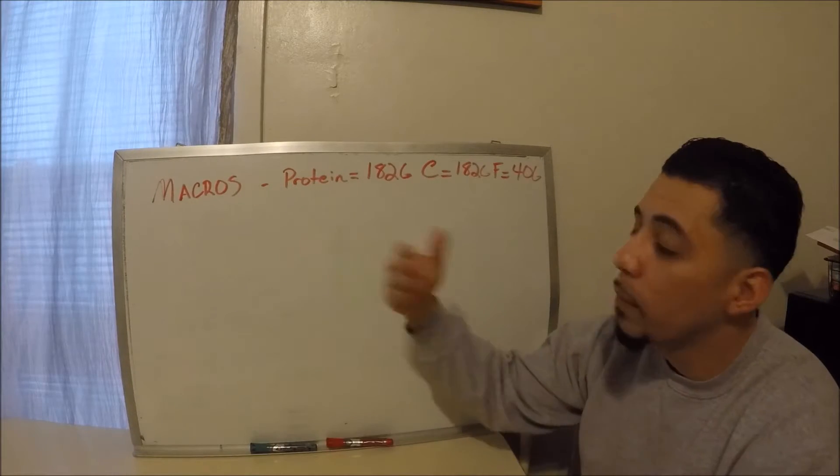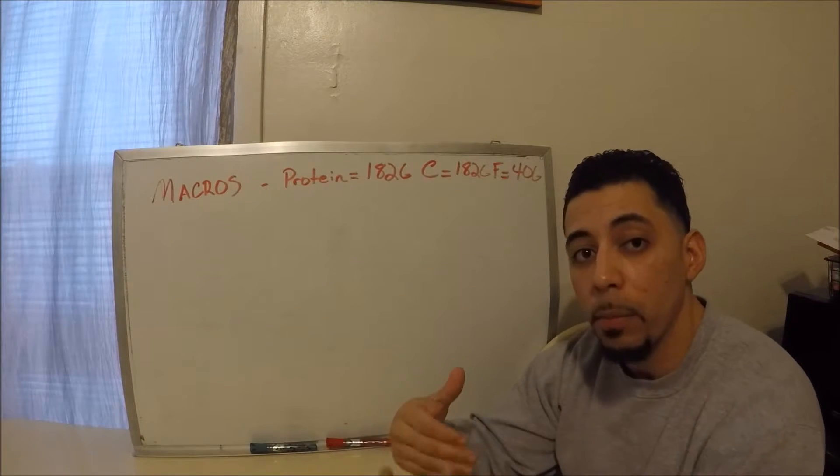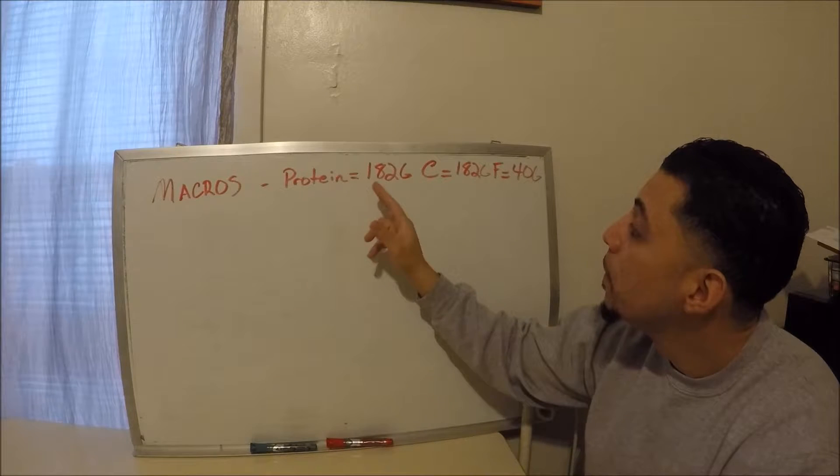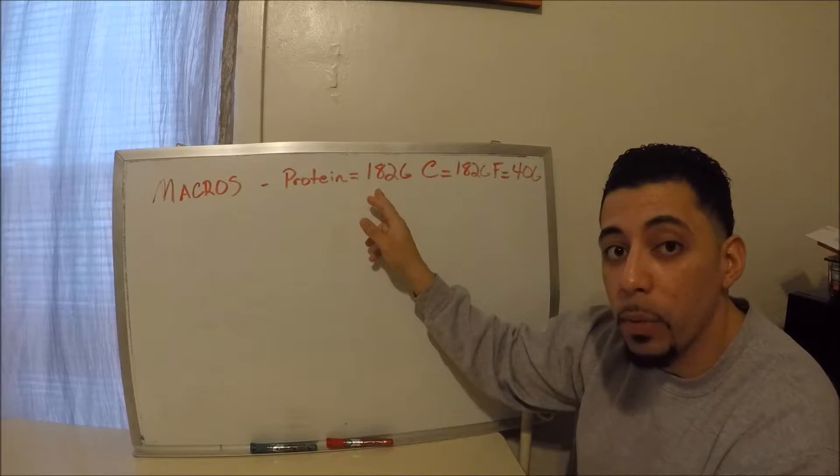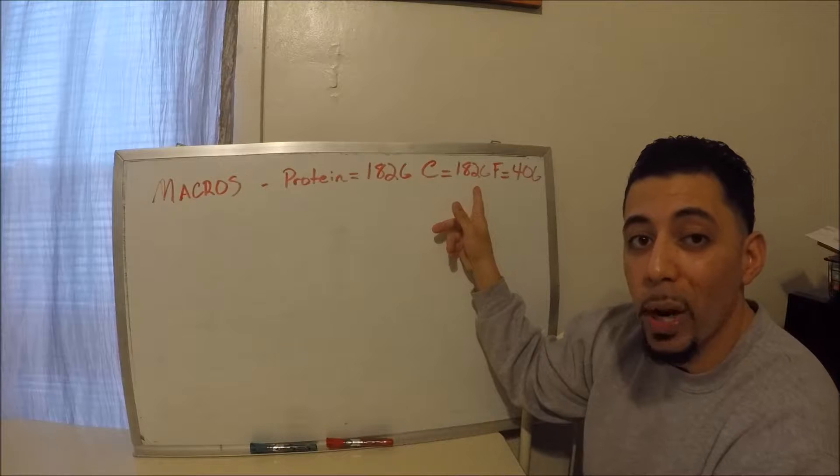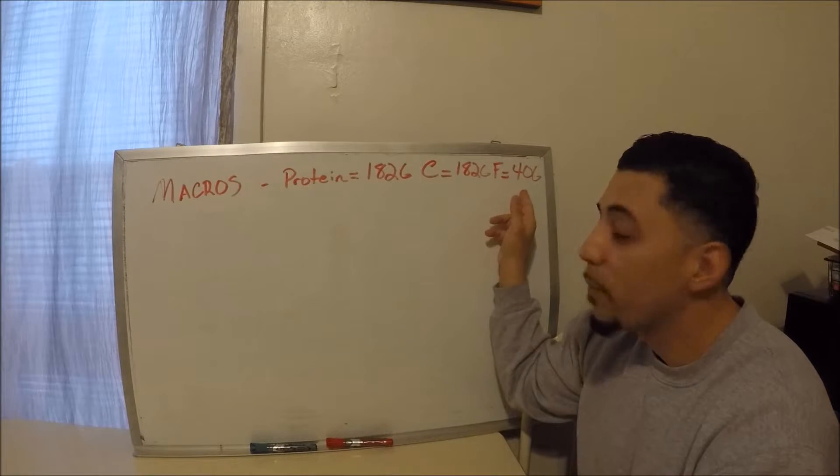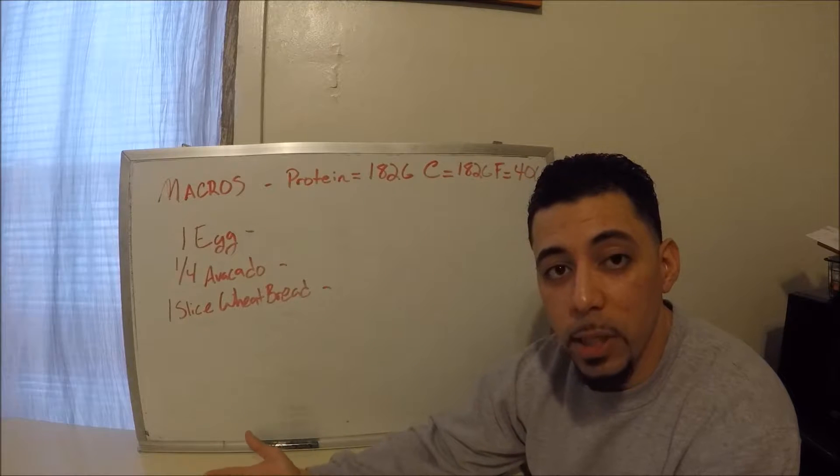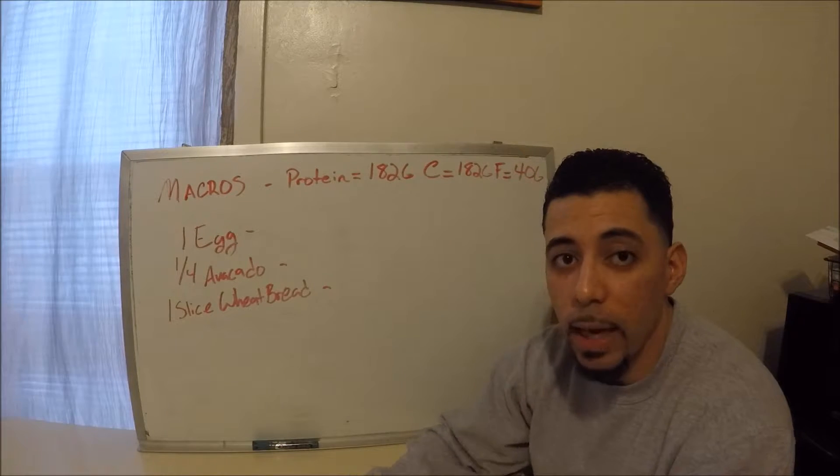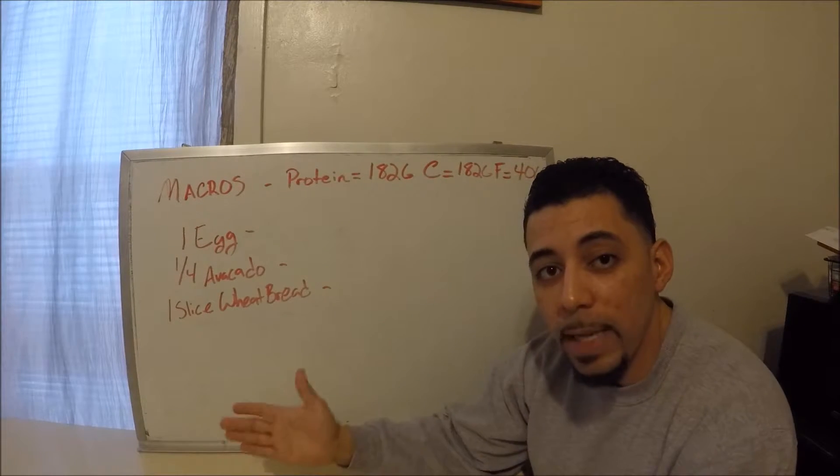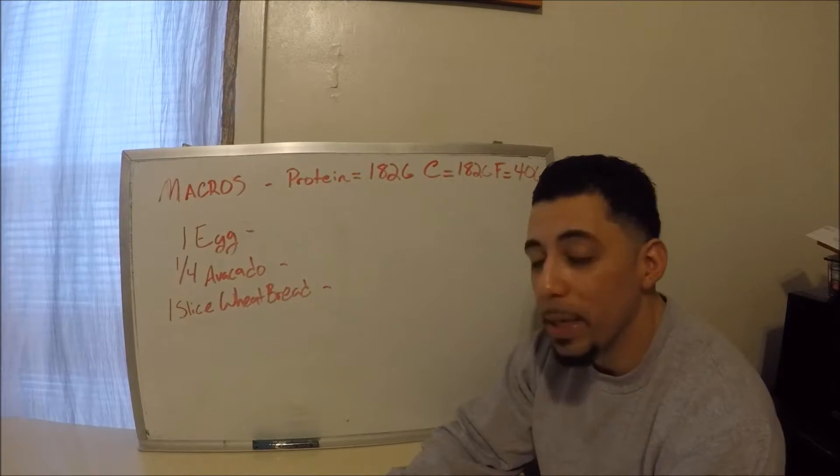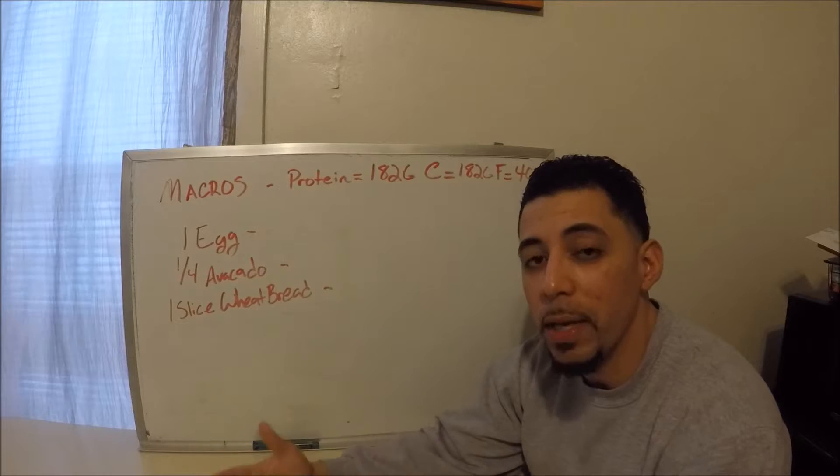So for me, if I'm going to be focused on weight loss, my macros currently are going to be 182 grams of protein in a day, 182 grams of carbs in a day, and 40 grams of fat. Egg, avocado, bread for breakfast sounds like a pretty healthy meal, and it is. It has good fats, good carbs, good protein for you.